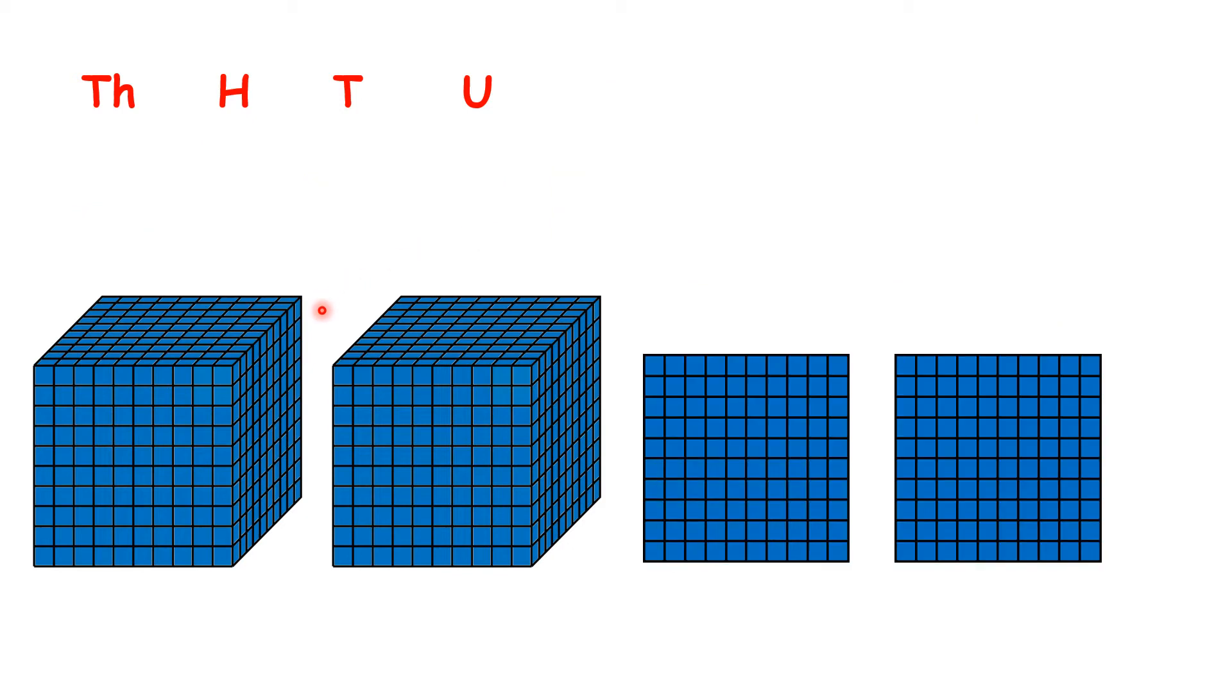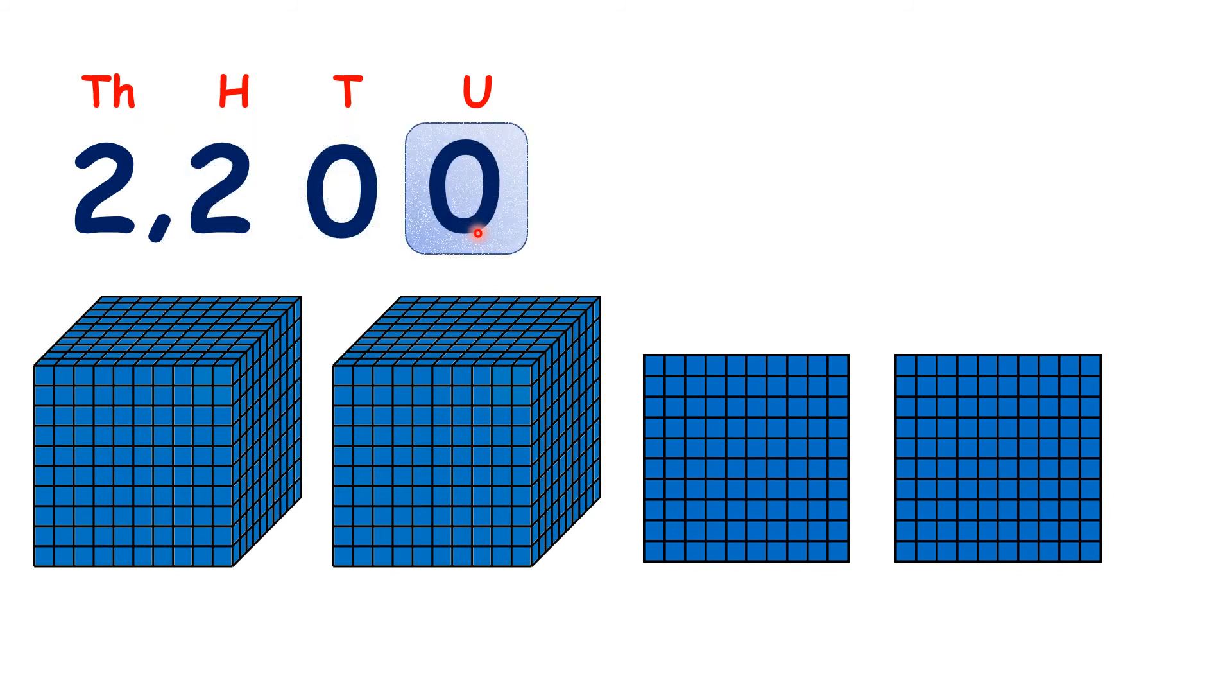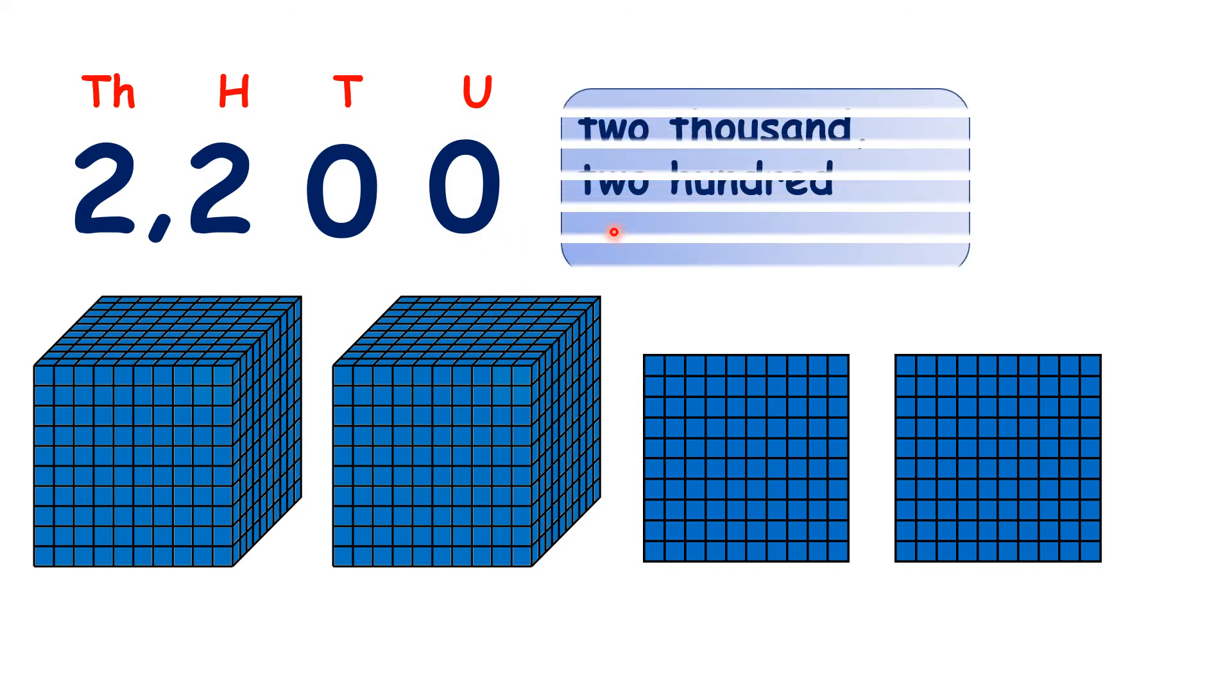So finally what do we have represented here? Two thousands, two hundreds, no tens and no units. So we have two thousand two hundred.